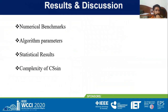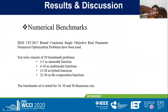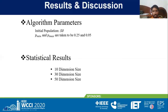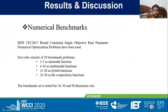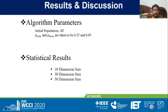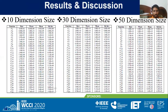The results and discussion section presents numerical results in terms of CEC benchmarks, algorithm parameters, statistical results, and complexity analysis of the proposed CS algorithm. Numerical results cover both CEC 2017 and CEC 2020 benchmark problems. The initial population for all algorithms under comparison was set to 50. The minimum and maximum probability values are 0.25 and 0.95 respectively, producing a linearly decreasing curve. Statistical results are presented for 10, 30, and 50 dimensions.